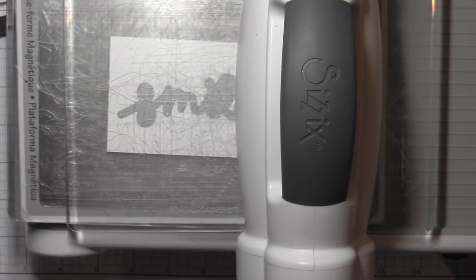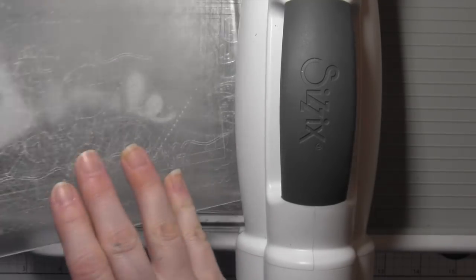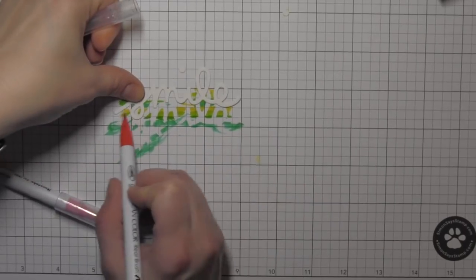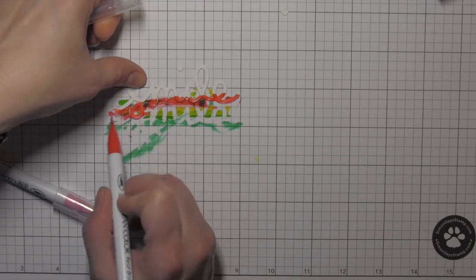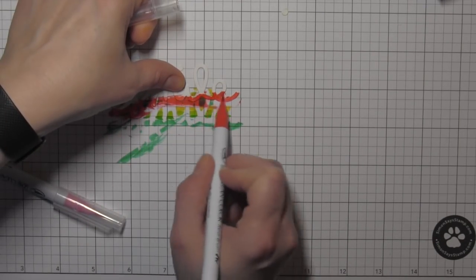Plus I have a scrap of fun foam that has the stick-it adhesive on both sides, and I'm going to die cut that using the die as well. Then I'm going to take a couple of my Zig Clean Color Real Brush markers that I used for the popsicles.